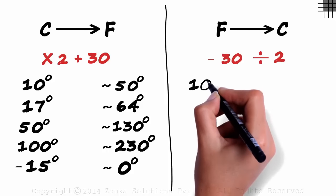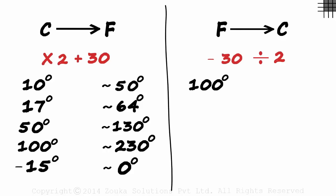We subtract 30 and then divide by 2. Take 100 degrees Fahrenheit for example. We subtract 30 and get 70. And 70 over 2 is equal to 35.